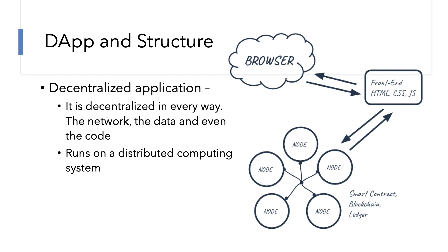Let's take a quick look at the structure of the decentralized application. First, we will have an end-user application written in HTML, CSS, and JavaScript. We will write all the code for the decentralized application with a smart contract, compile it, and deploy it to our backend blockchain.